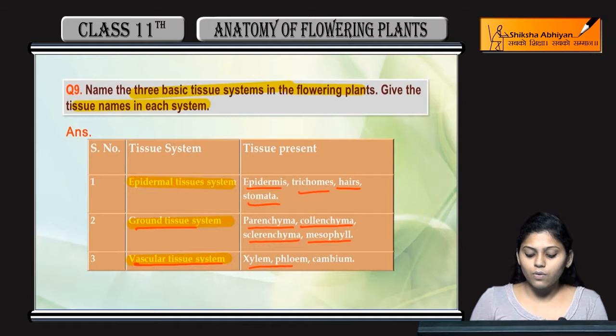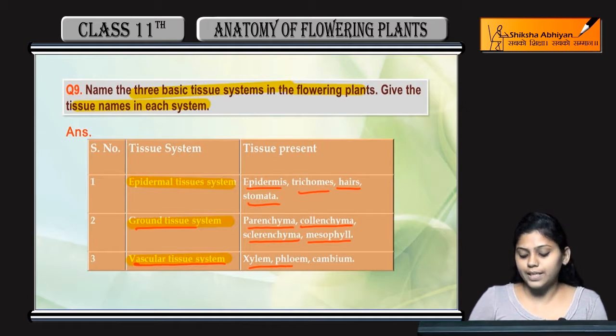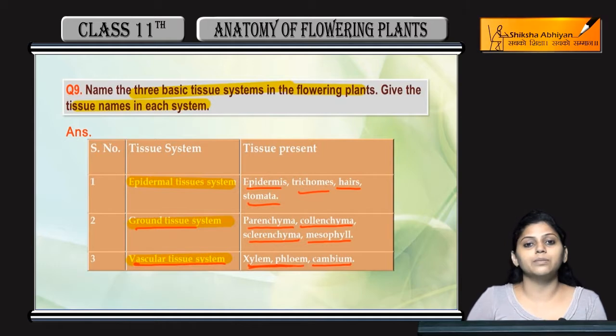The third one is the vascular tissue system, which includes xylem, phloem, and cambium tissues.